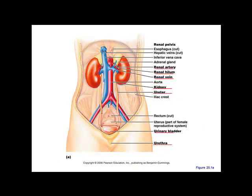We're starting the renal system — renal means kidney. Here's our abdominal aorta, celiac trunk, superior mesenteric, inferior mesenteric, and inferior vena cava. We have our renal vein and renal artery going to the kidneys at the renal hilum. The hilar region is the entrance point where blood vessels, nerves, and lymphatics come in. We're going to follow a drop of urea through the kidney, then through the ureter into the bladder and out through the urethra.